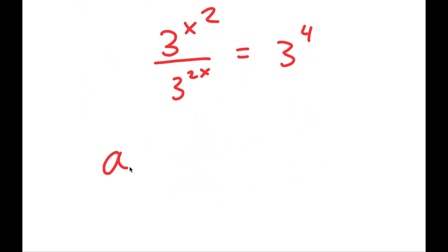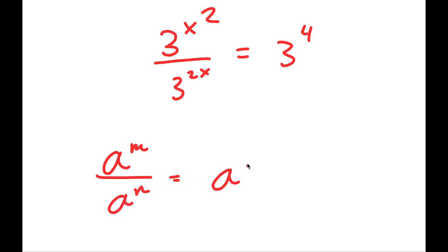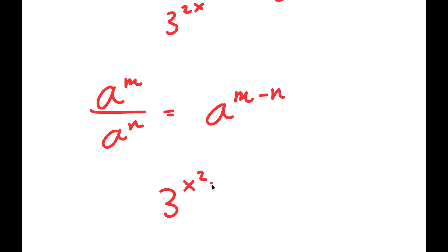And now, if I have something in the form a to the power of m over a to the power of n, this is equal to a to the power of m minus n. So I get 3 to the power of x squared minus 2x is equal to 3 to the power of 4.